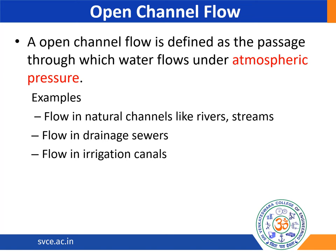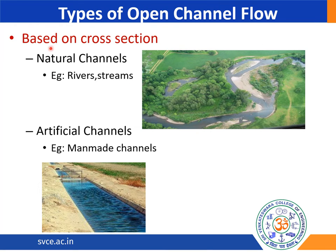The first type is based on cross section. Based on cross section, the open channel flow is classified as natural channels and artificial channels. In natural channels, the cross section will be varying from one place to another. In this picture itself, we can see that the width of the river is high at one point whereas the width of the river is very small at another point, so the cross section is varying across the spatial direction. Whereas in artificial channels, i.e. man-made channels, the cross section remains constant across the section.